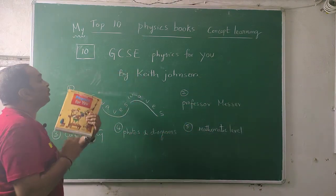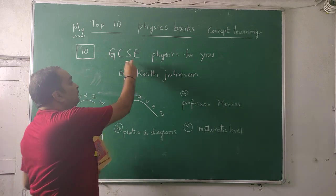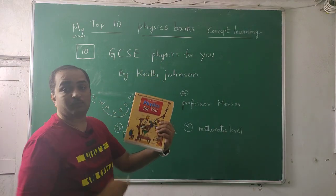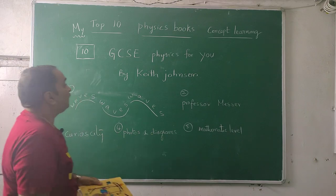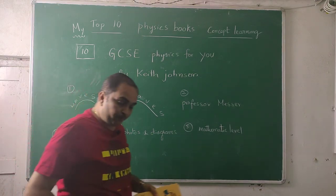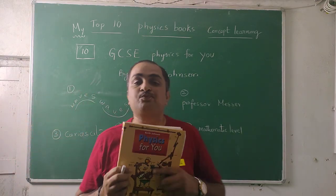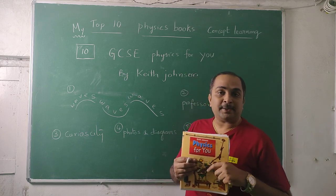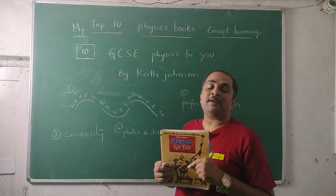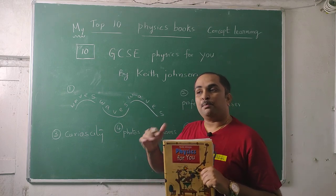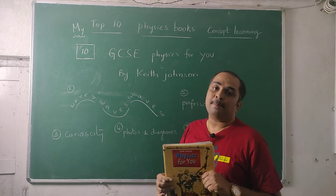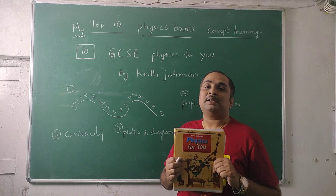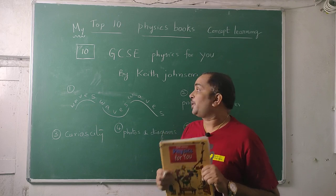The name of this book is GCSE Physics for You, and the author is Keith Johnson. It's a very good book for introductory level — students in grades 6 through 10 can read it, but I feel it's particularly suited to 9th and 10th standard. Anyone who wants to learn physics can use it; it's not compulsory that they be preparing for a competitive examination.